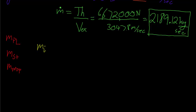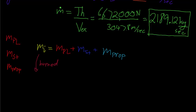The initial mass of our rocket is the mass of the payload, plus the mass of the structure, plus the mass of the propellant. After the rocket has fully burned, the initial mass becomes the final mass. The mass of the payload and the mass of the structure are still there, but the mass of the propellant is all used up — it is zero, because we burned it all to create the motion.